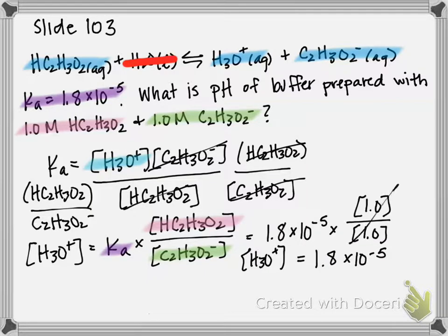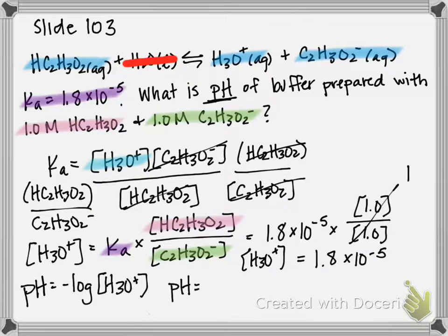So then, ultimately, we're solving for pH. Remember, pH is equal to negative log of our hydronium concentration. So if we plug that in, pH is equal to negative log of 1.8 times 10 to the negative 5, we get that pH is equal to 4.74.